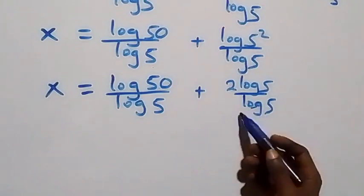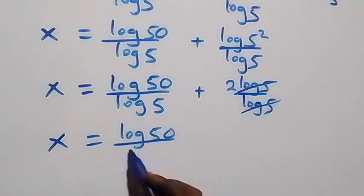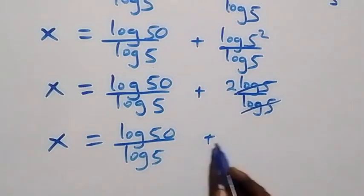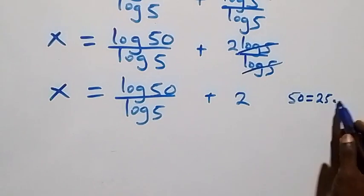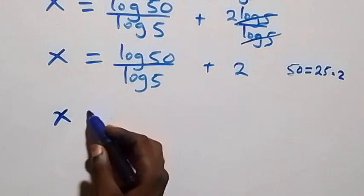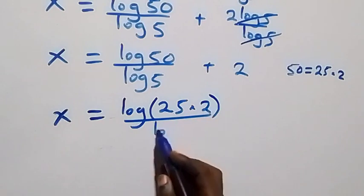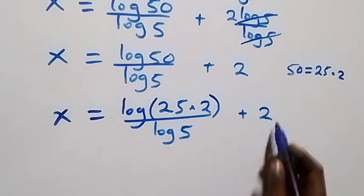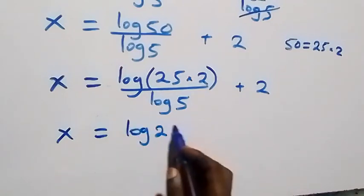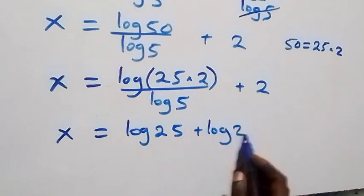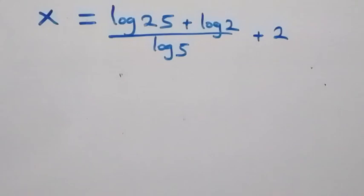Log 5 cancels each other, we have 2 left, and x equals to log 50 over log 5 plus 2. Also, we can express 50 as 25 times 2. Then what we have becomes x equals to log of 25 times 2, over log 5, plus 2. This follows the law of logarithms and becomes x equals to log 25 plus log 2, over log 5, plus 2.